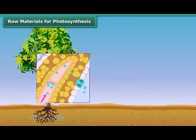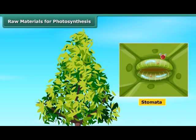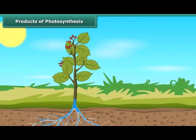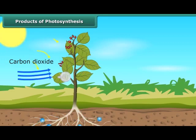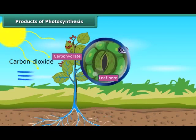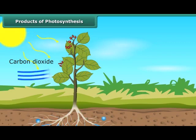Likewise, carbon dioxide from air is taken in through tiny pores present on both surfaces of the leaves. Such pores are called stomata, and these pores are surrounded by guard cells. After reaching the leaf, carbon dioxide and water react in the presence of sunlight to form carbohydrates. The carbohydrate is ultimately converted into starch, which gets stored in different parts of the plant. Therefore, the first food product formed during photosynthesis is starch.